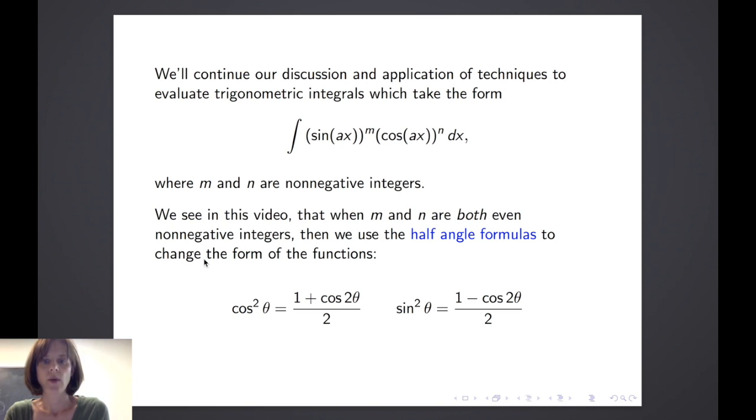In this case, we will look at when m and n are both even non-negative integers, and we will use the half angle formulas to change the form of the functions. Specifically, we will use cosine squared theta equals 1 plus cosine of 2 theta divided by 2, and sine squared theta equals 1 minus cosine of 2 theta divided by 2.